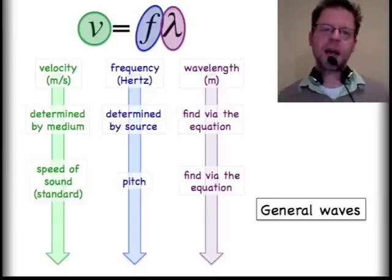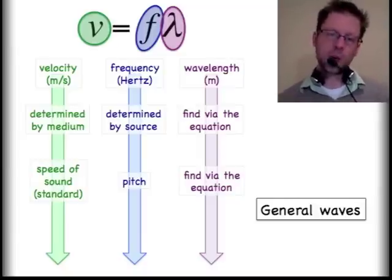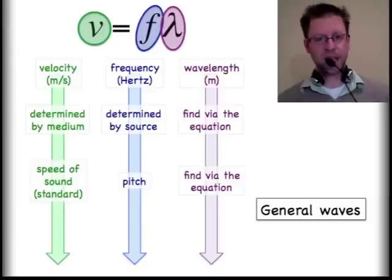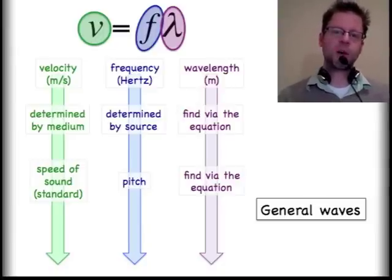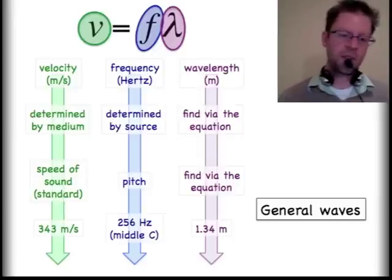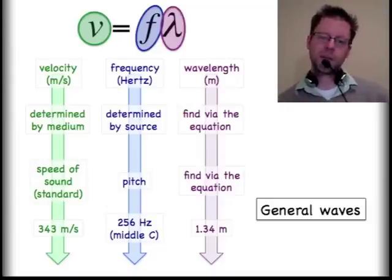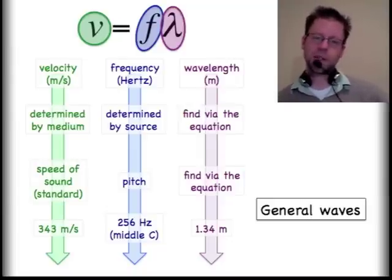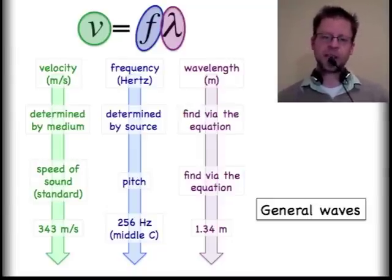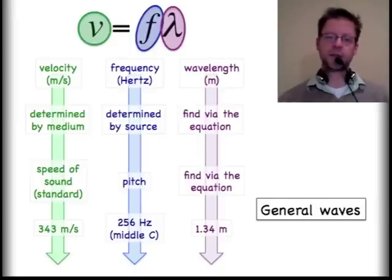Specifically for sound, we can say the velocity is the speed of sound. When we're talking about sound and music, the frequency of the wave we tend to call the pitch. And that leaves our wavelength still unchanged. I'm going to give an example here. For a velocity of sound of 343 meters per second, and if I use a frequency of middle C, which is 256 hertz, then I would have a wavelength that is approximately 1.34 meters. And so that's a pretty good wavelength between little high pressure zones.